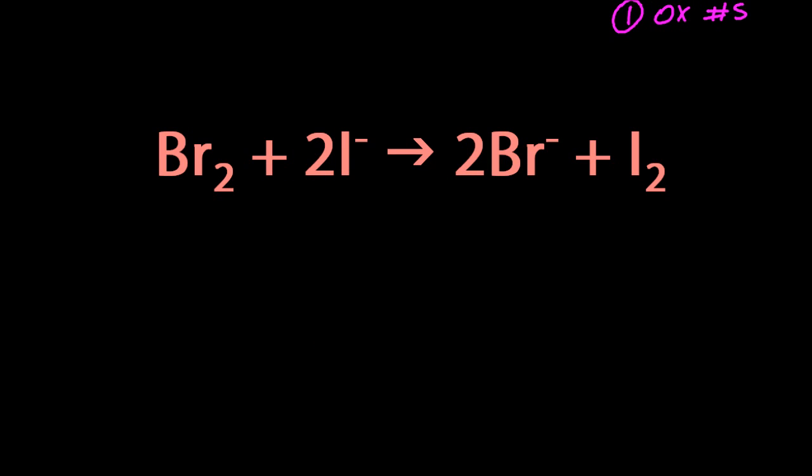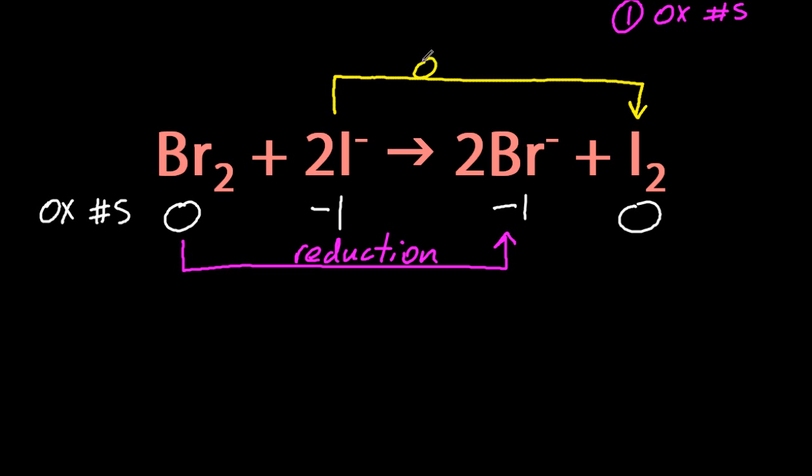So number one, put the oxidation numbers in. Now you can ignore that coefficient, that big two, and you can ignore that one there when you're doing the oxidation numbers. So that's reduction, gain of electrons, and oxidation, that's loss of electrons.